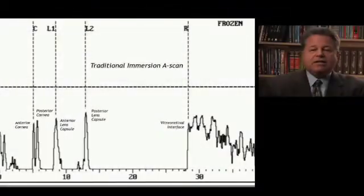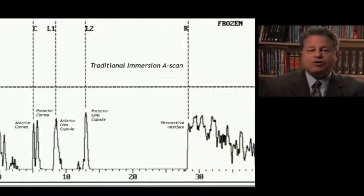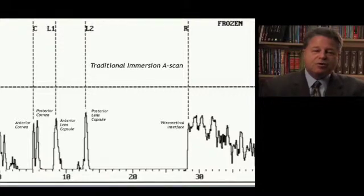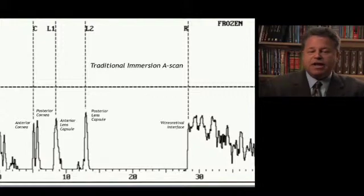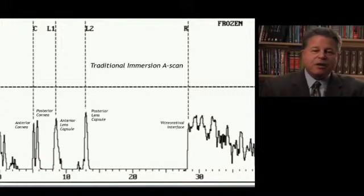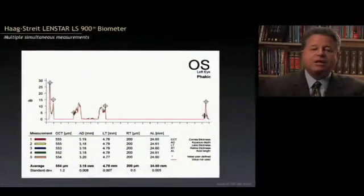Getting into how the measurements are actually done — this is what a traditional immersion A-scan looks like. We see spikes for the anterior cornea, posterior cornea, anterior lens capsule, posterior lens capsule, and the vitreoretinal interface. What Haag-Streit has done is copied this as a presentation of the axial length measurement so that you can go in and adjust the measurement gates in pretty much the same way as you would with an immersion A-scan.